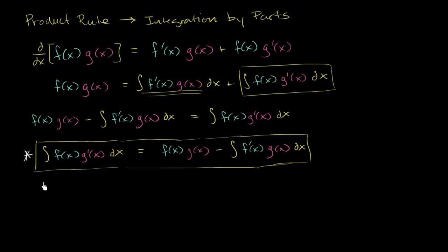So let's say I want to take the antiderivative of x times cosine of x dx. Now, if you look at this formula right over here, you want to assign part of this to f of x and some part of it to g prime of x.